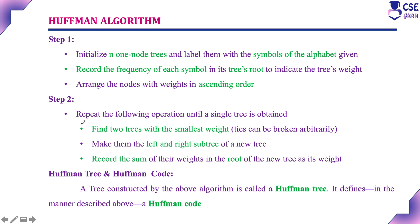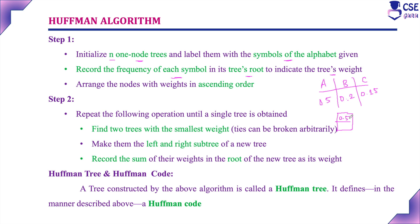Let's check the Huffman algorithm with an example problem. Given letters with their frequencies: A is 0.5, B is 0.2, and C is 0.25. Step 1: initialize n one-node trees and label them with the symbols of the alphabet. Record the frequency of each symbol in its tree's root to indicate the tree's weight. So we create a one-node tree for A with frequency 0.5, for B with 0.2, and for C with 0.25. Then arrange the nodes with weights in ascending order: B (0.2), C (0.25), A (0.5).